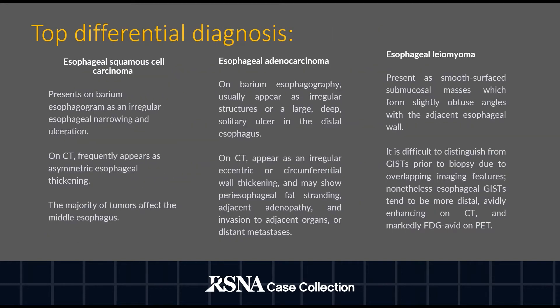The differential diagnosis includes esophageal squamous cell carcinoma, esophageal adenocarcinoma, and esophageal leiomyoma. Squamous cell carcinoma presents on barium esophagram as irregular esophageal narrowing and ulceration. On CT it frequently appears as asymmetric esophageal thickening, and the majority of tumors affect the middle esophagus.